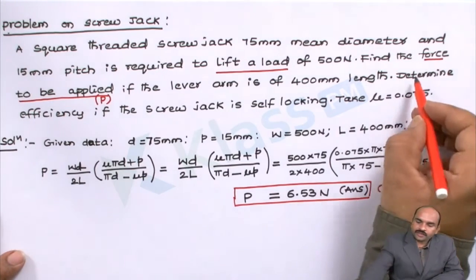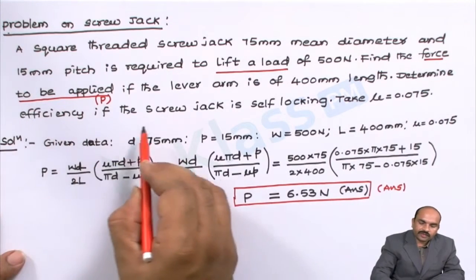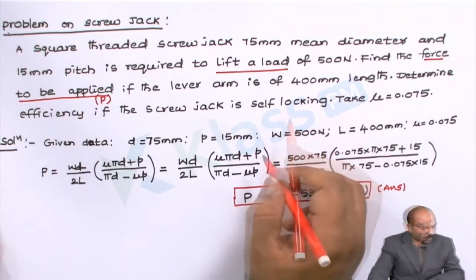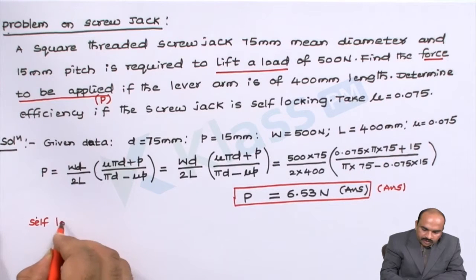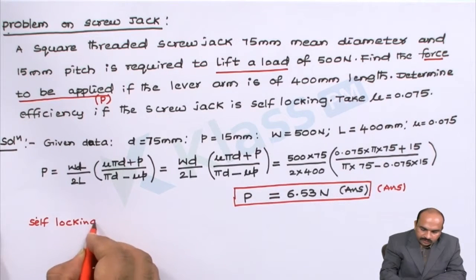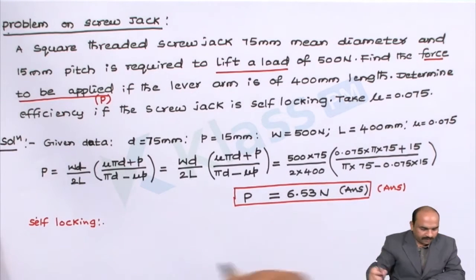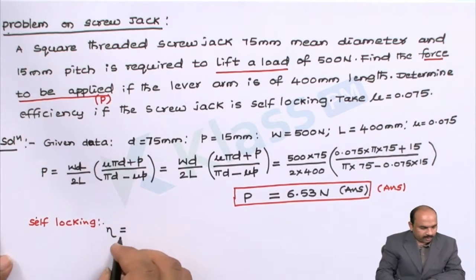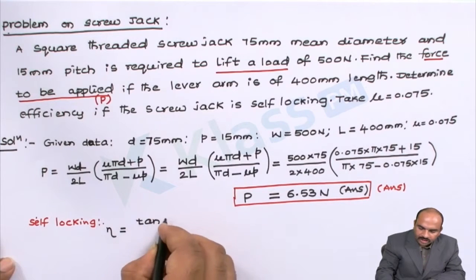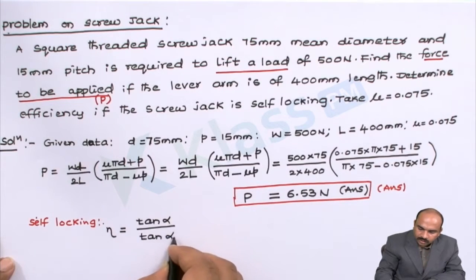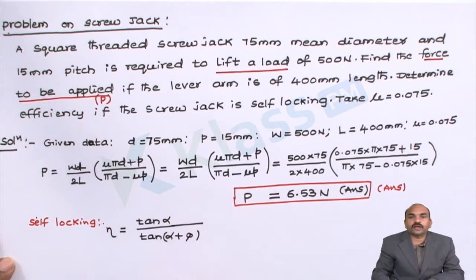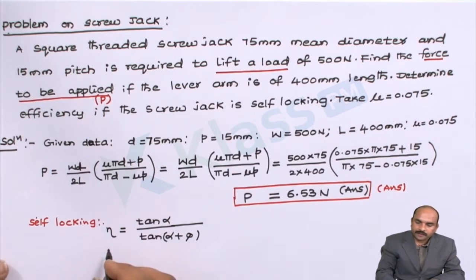For the second part, we need to determine the efficiency of the screw jack under the self-locking condition. The formula for efficiency under self-locking is: eta = tan(alpha) / tan(alpha + phi). We will use this formula to calculate efficiency.